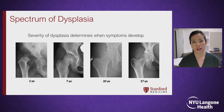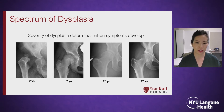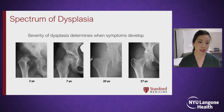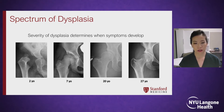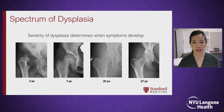Hip dysplasia exists as a spectrum. The more severe hip dysplasia, such as developmental dislocation, usually presents and is evident pretty early in life. But the milder types of dysplasia usually take many more years to become symptomatic and may not present until early adolescence or young adulthood.